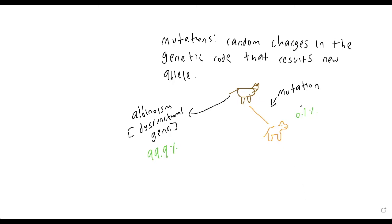So mutations can cause gene flow because this random orange mouse will spread its genes throughout the population. Mutations occur either through random errors in the S phase of the cell cycle — where DNA is copied and mistakes aren't corrected — or through environmental factors that cause DNA to mutate, which can result in cancer or similar conditions.